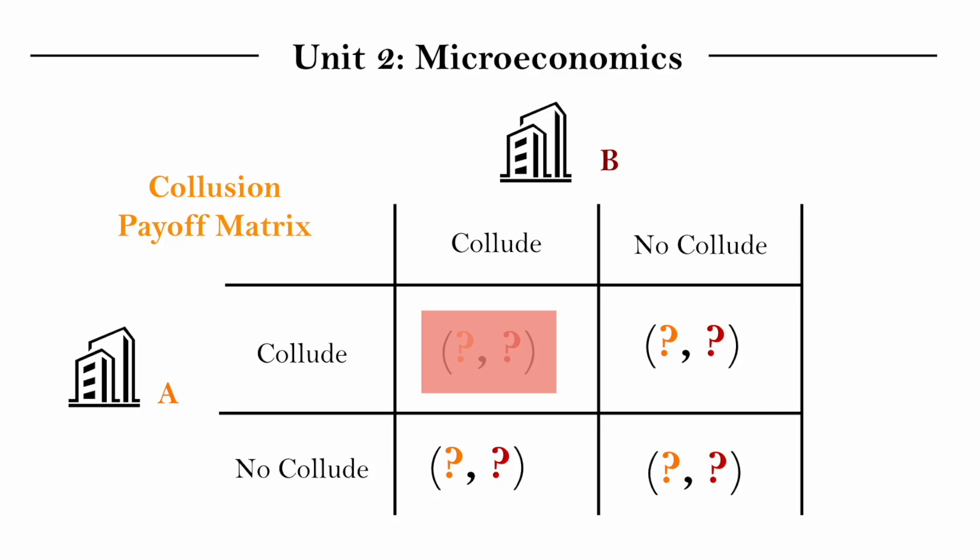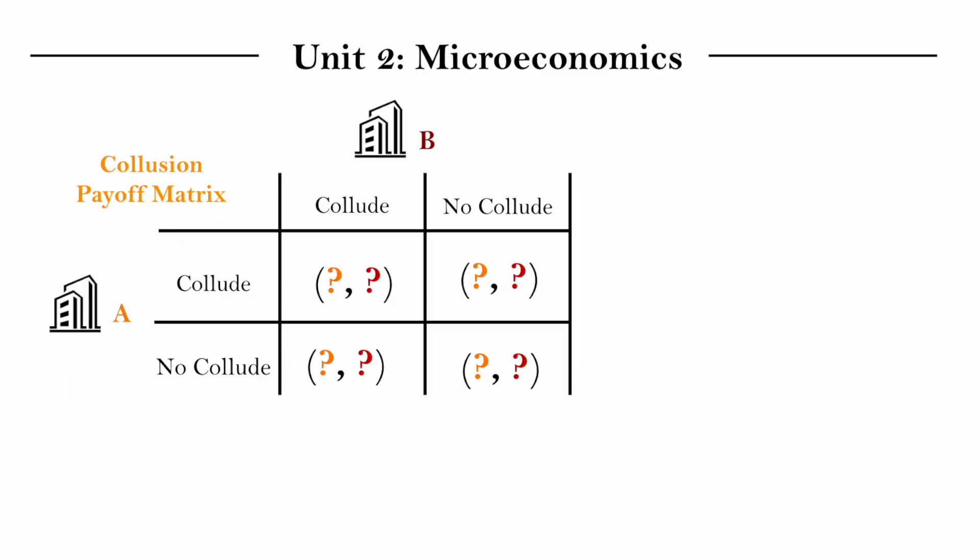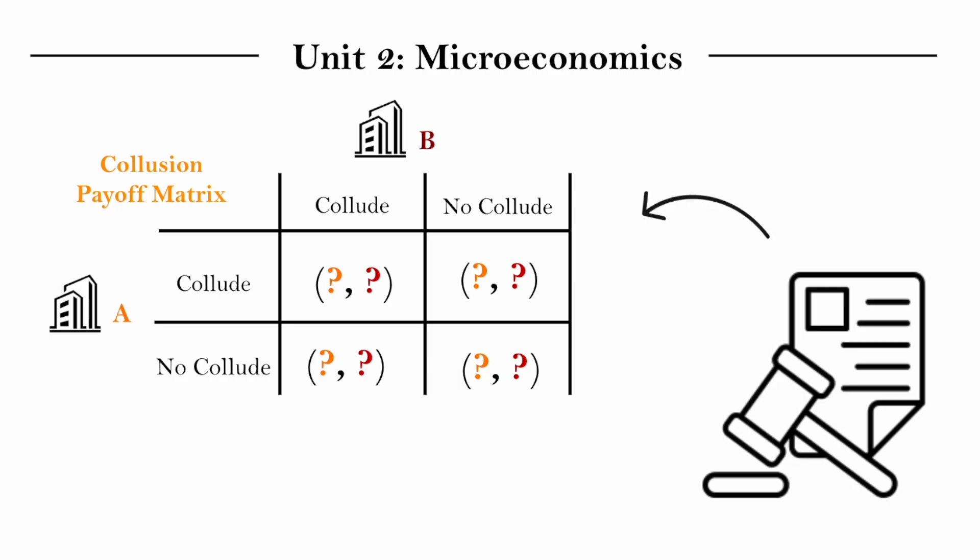And ideally if you are a policy maker that wants to prevent collusive oligopolies, you would want to have it that the legal consequences of collusion should outweigh the benefits. So let's say the fine from getting caught from colluding should be larger than the profit firms would have gained from the collusion, because if the fine is smaller, why not collude, risk getting caught, because if you get caught, pay the fine and still have those net benefits.